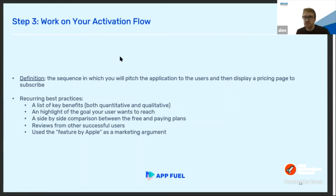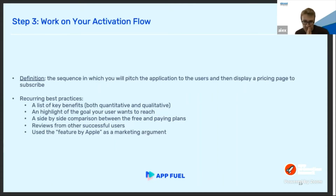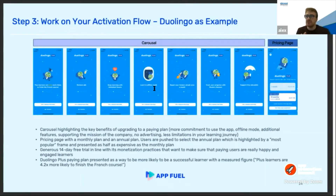That's for step two — where you put your activation flow in the user journey. Now step three: we work on the activation flow itself. By looking at the activation flow of more than 30 apps, I believe there are a set of best practices to keep in mind while designing your activation flow. I'll be super practical by looking at three examples that have great activation flows: Duolingo, Mojo — a French creative app to make professional stories for social media — and Reflectly, a personal journaling app.